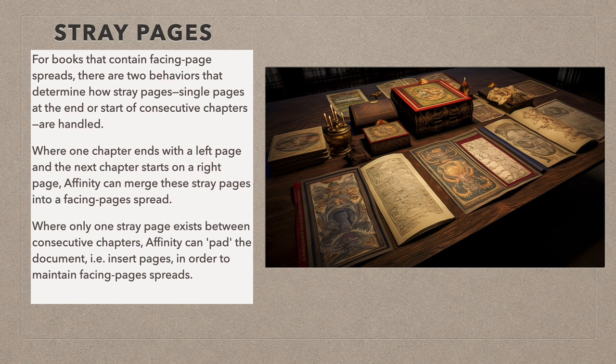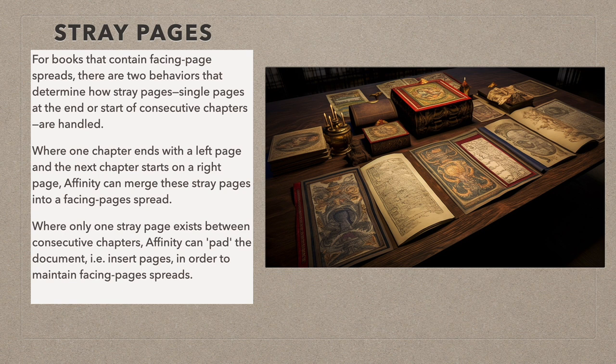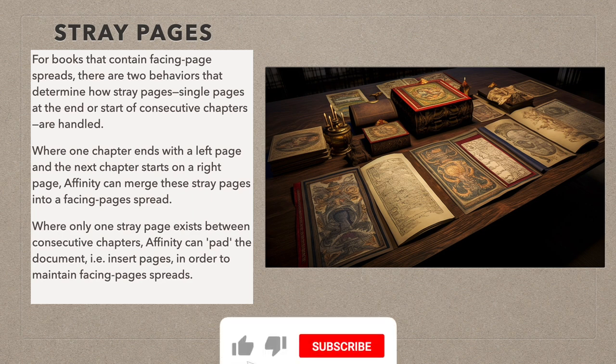Now, stray pages — those odd pages left at the ends of books and chapters. For books that contain facing page spreads, which is most of them, there are two behaviours that determine how stray pages at the end or start of consecutive chapters are handled. When one chapter ends with a left page and the next chapter starts on a right page, Affinity can merge these stray pages into a facing pages spread. Where only one stray page exists between consecutive chapters, Affinity can pad the document — i.e., insert pages — in order to maintain facing page spreads.